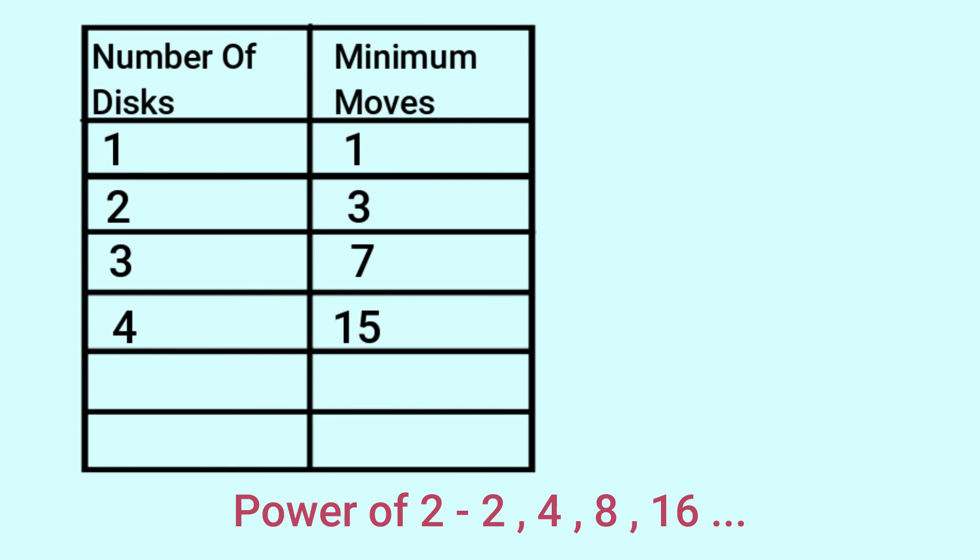So for 1 disk, that is 1 less than the first power of 2. The first power of 2 is 2, so 2 minus 1 gives us 1. For 2 disks, it is 1 less than the second power of 2, so 2 times 2 minus 1 is 3. For 3 disks, it is 2 to the power of 3 minus 1, which equals 7. And again for 4 disks, 2 to the power of 4 minus 1 is 15. So for n disks, it is 2 to the power of n minus 1 minimum moves are needed. This is the math behind the puzzle.